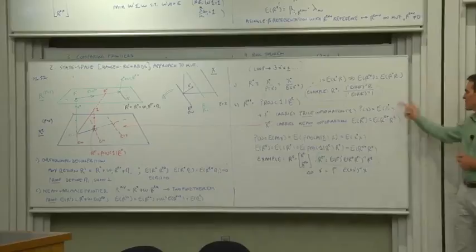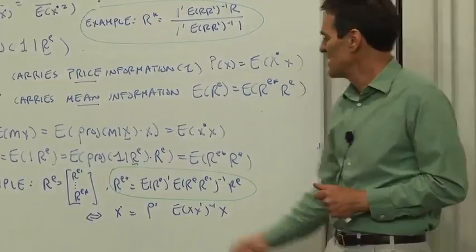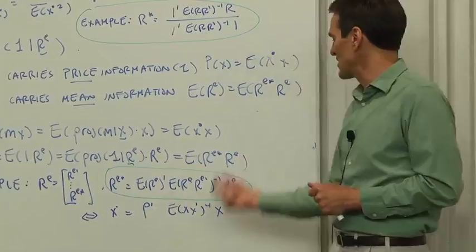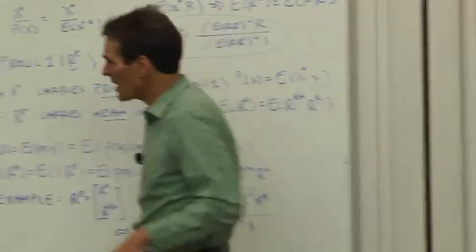So we run a regression with 1 on the left and the excess returns on the right. And it generates means in the same way that x star generates prices. To further demystify it, how could we construct it? The same way we constructed x star. Here's an example of an x star that works. The same construction, expected excess return prime second moment matrix inference times excess return, that is an excess return. It's a portfolio of excess returns.